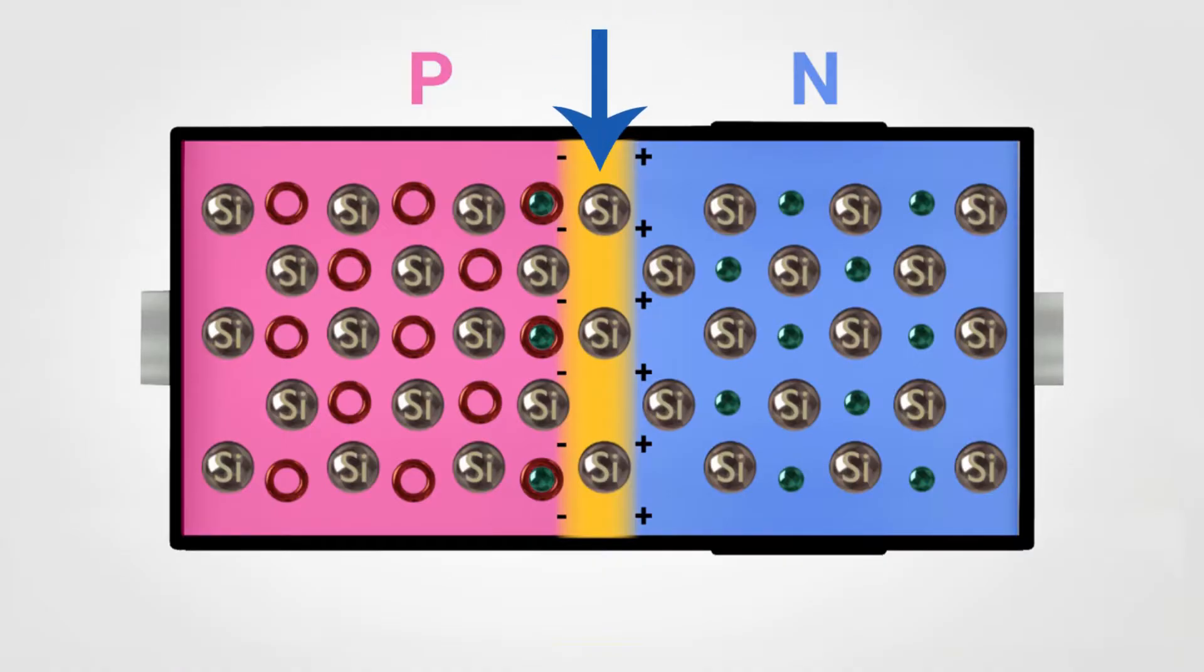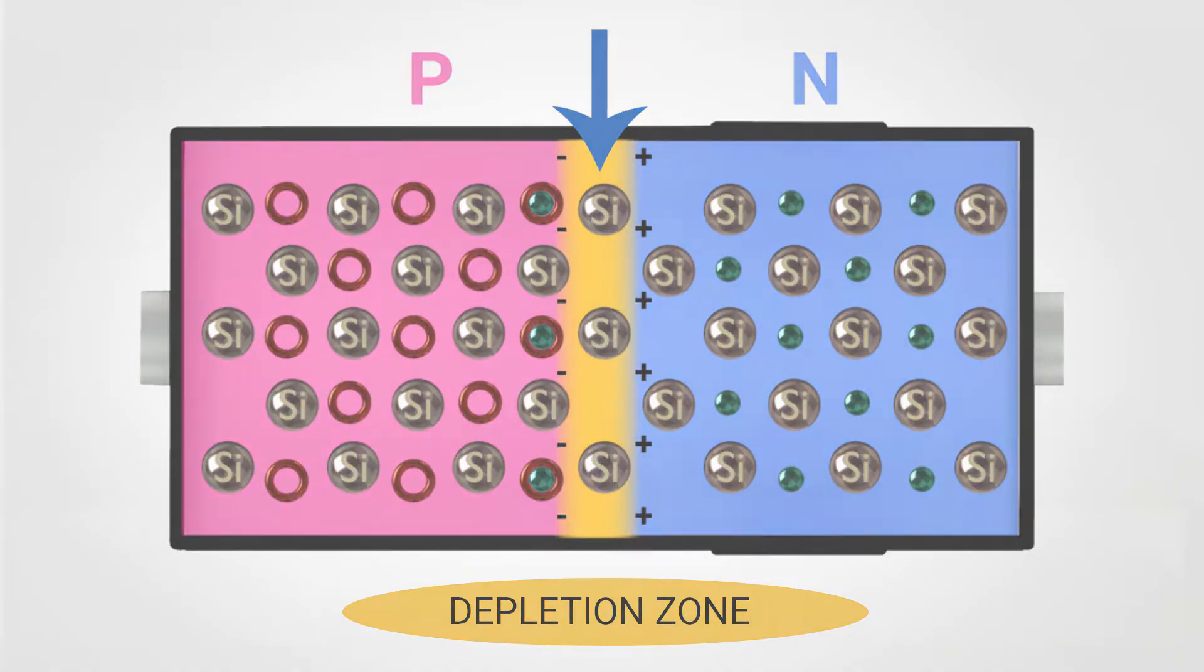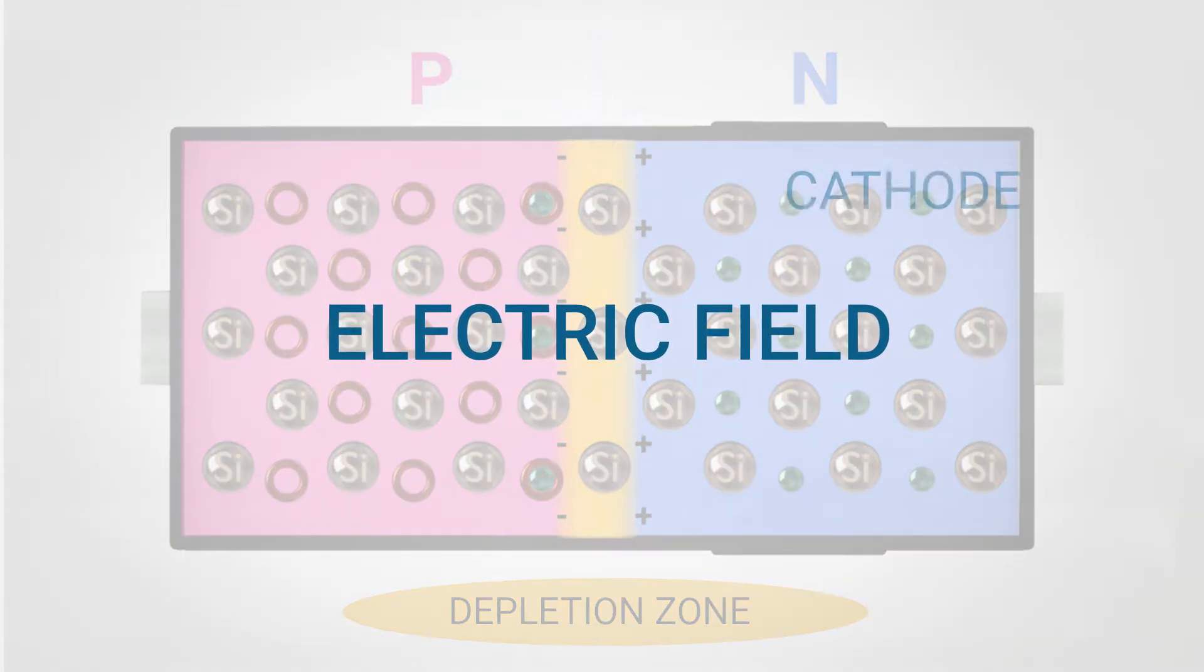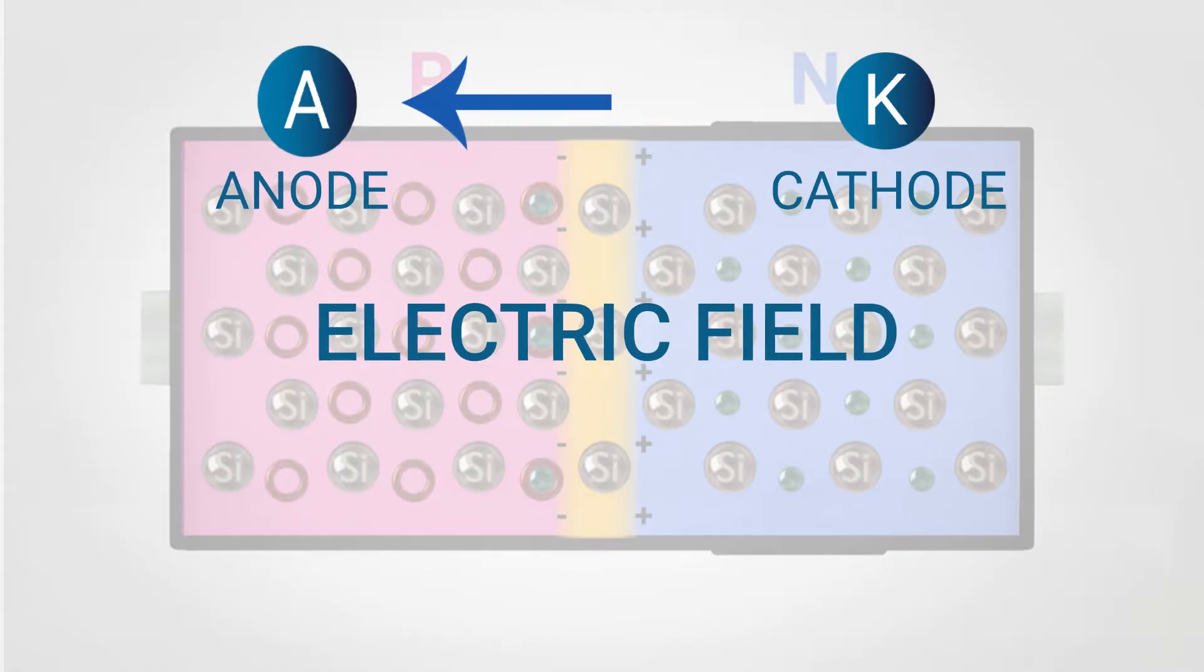We can thus see the so-called depletion zone. As there is a positive and negative charge in this area, an electric field will be created, which will go from the cathode, K, towards the anode, A.